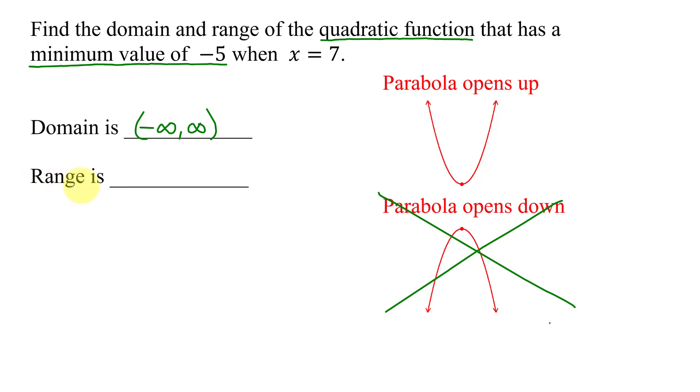Now the range is not all real numbers. It depends on whether the parabola opens up or down and I need the coordinates of the vertex. So this vertex occurs when x equals 7. The x value is 7. And the minimum value of the function negative 5 is the y value of the vertex.